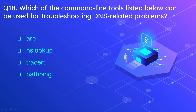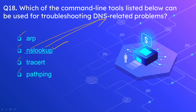Question 18: Which command line tool can be used for troubleshooting DNS-related problems? The options are arp, nslookup, tracert, and pathping. The correct answer is nslookup — DNS stands for Domain Name Server, and ns also stands for name server, so you can relate both to identify the correct answer.